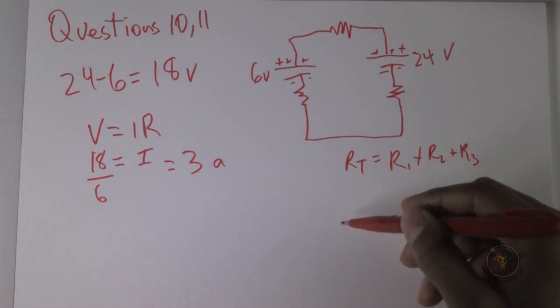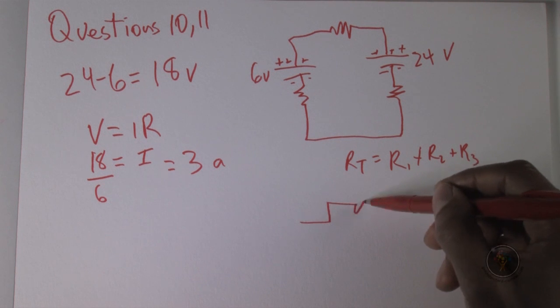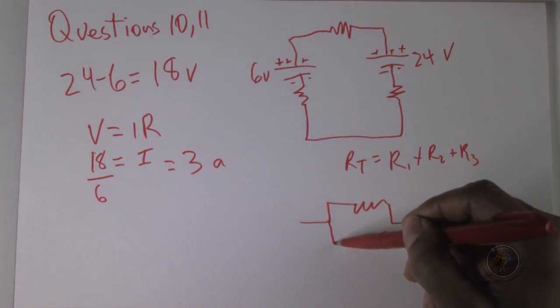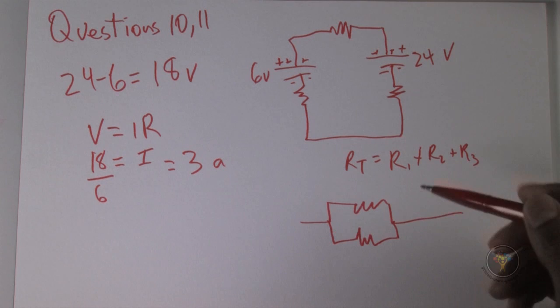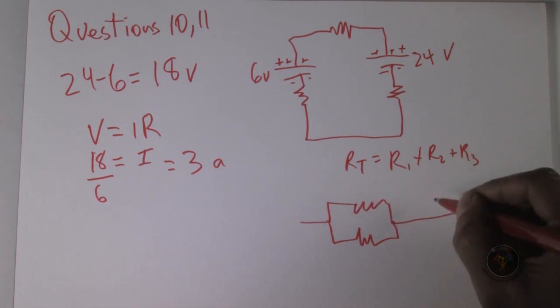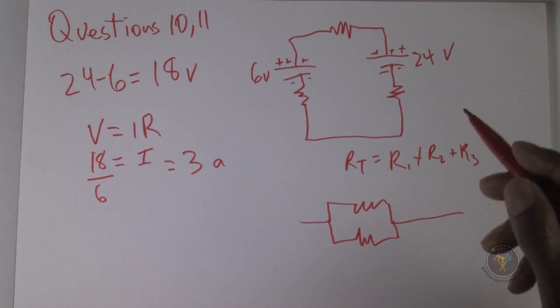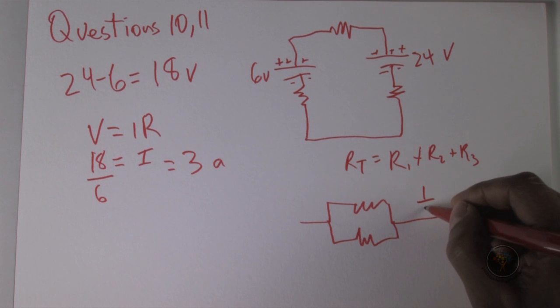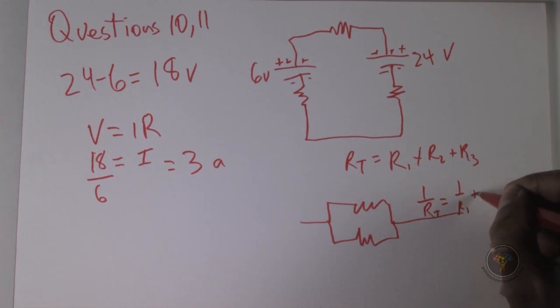Just to mention that if it was of course a parallel circuit, then the total resistance would be 1 over R total equals 1 over R1 plus 1 over R2.